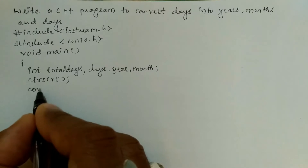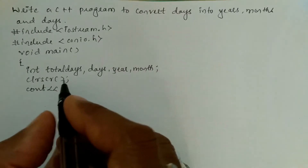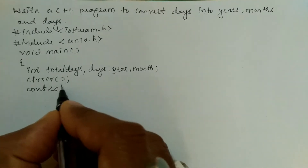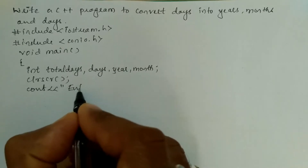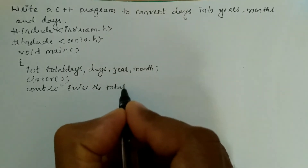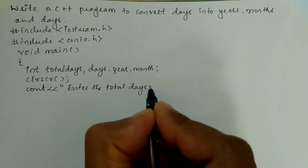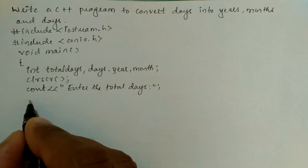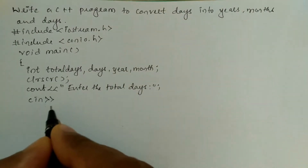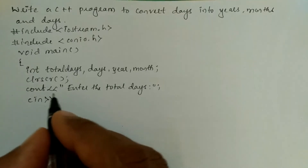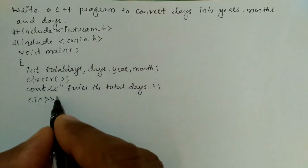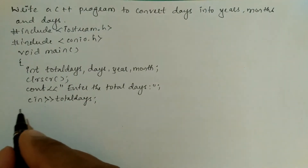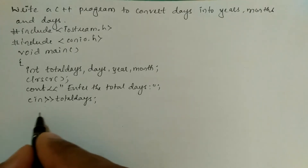Now I'm going to write clrscr(), which is used to clear the screen. Next, we will ask the user to enter the total days using a cout statement with the stream insertion operator: cout << "Enter the total days"; and then we receive the value from the user through the keyboard using the cin statement: cin >> total_days;